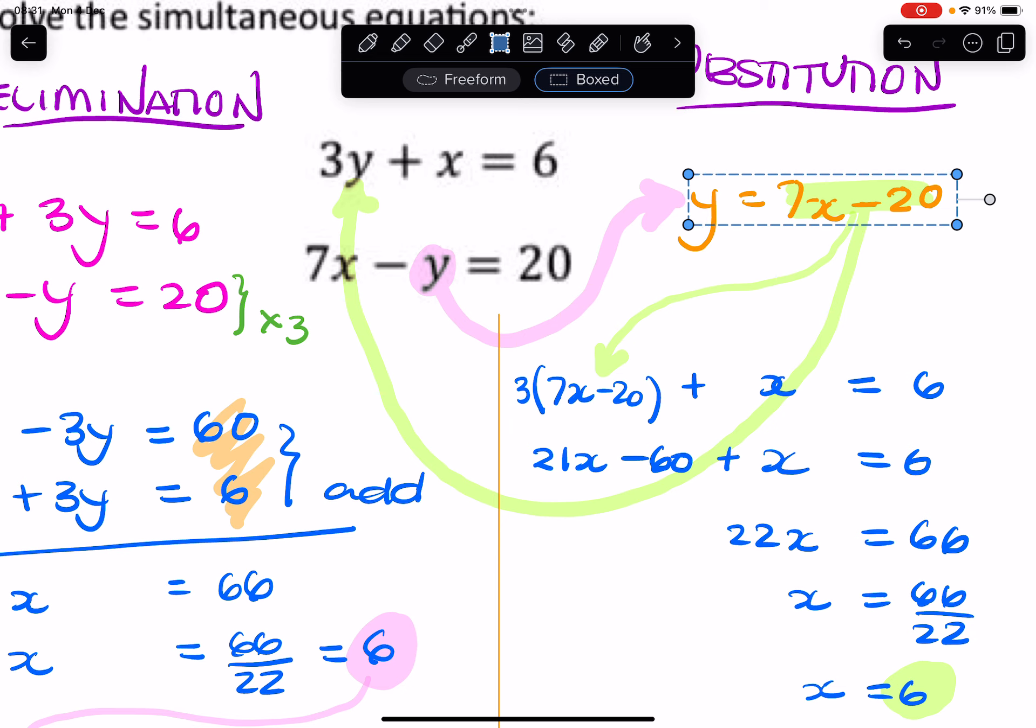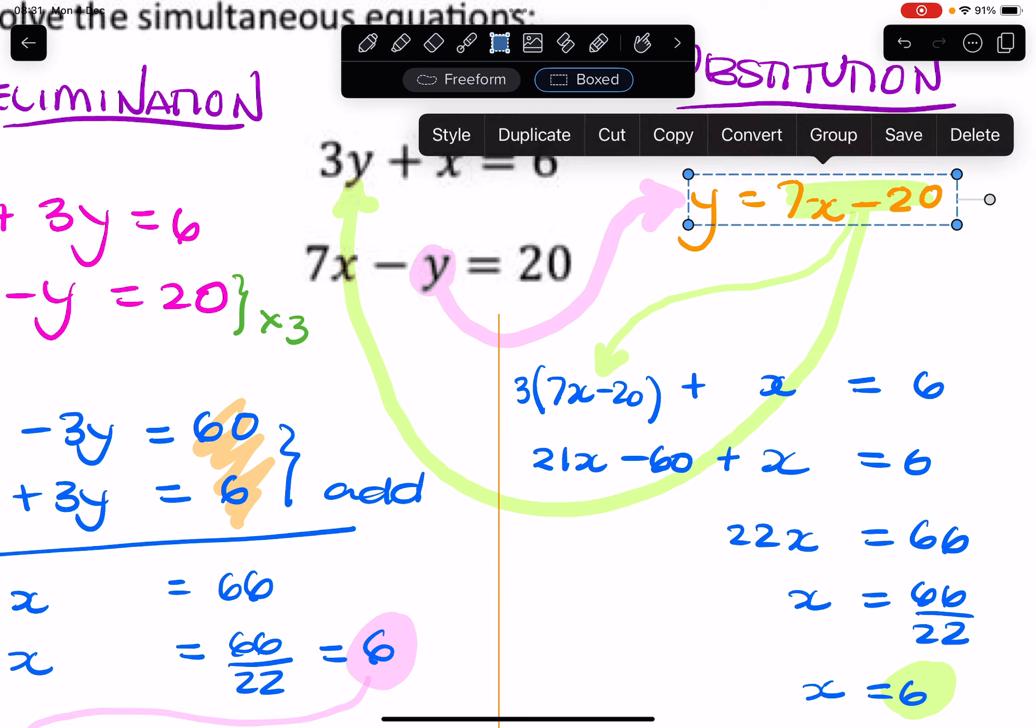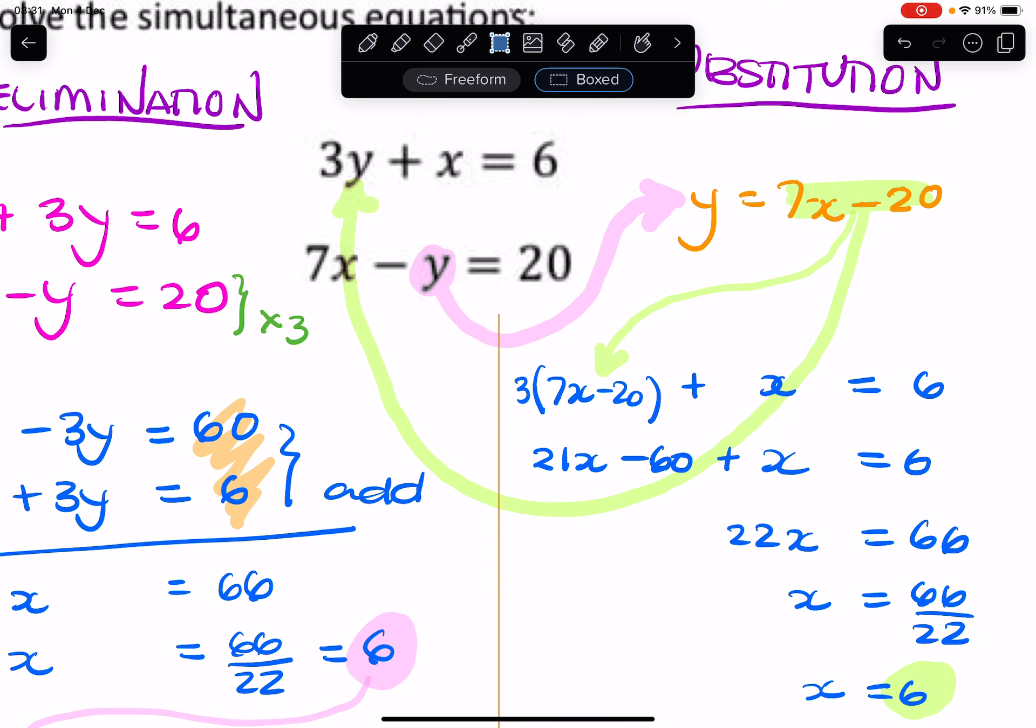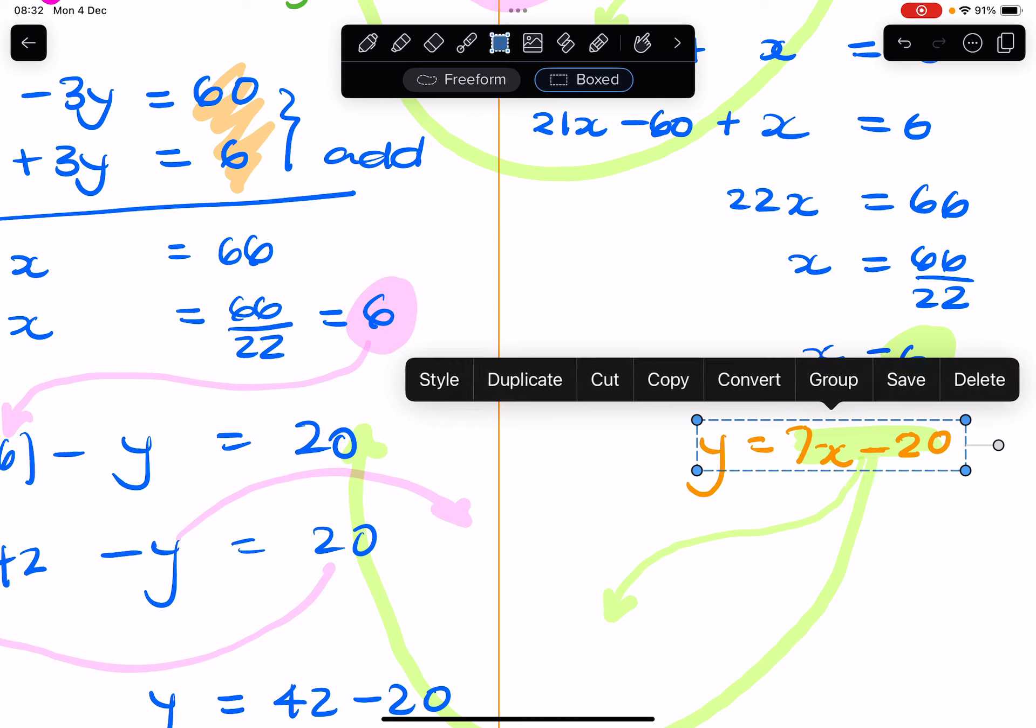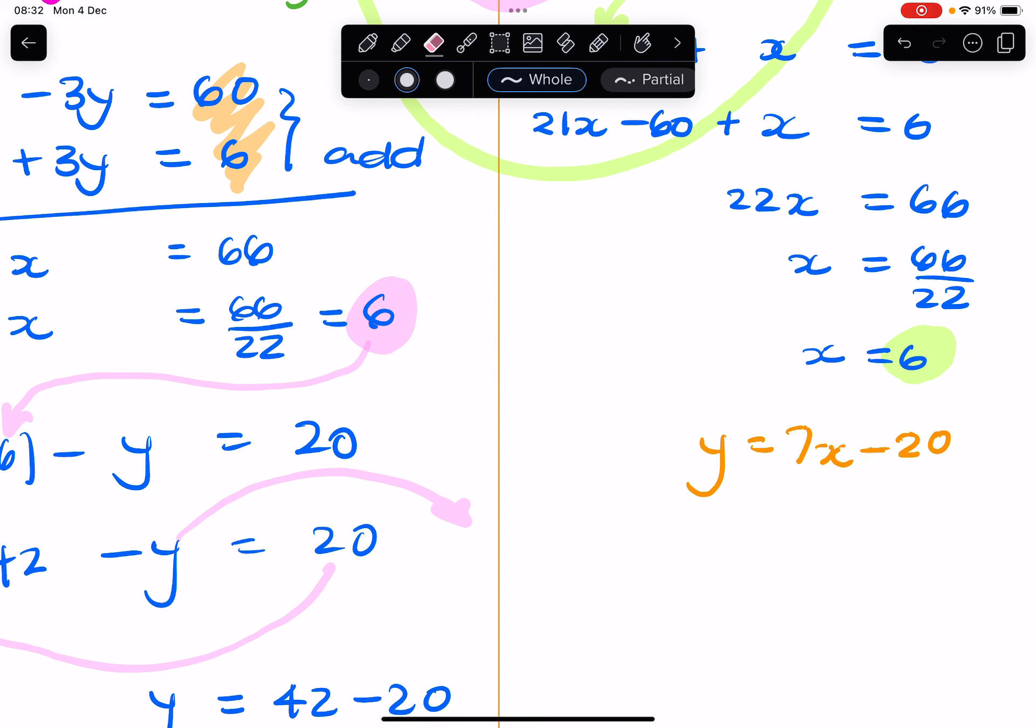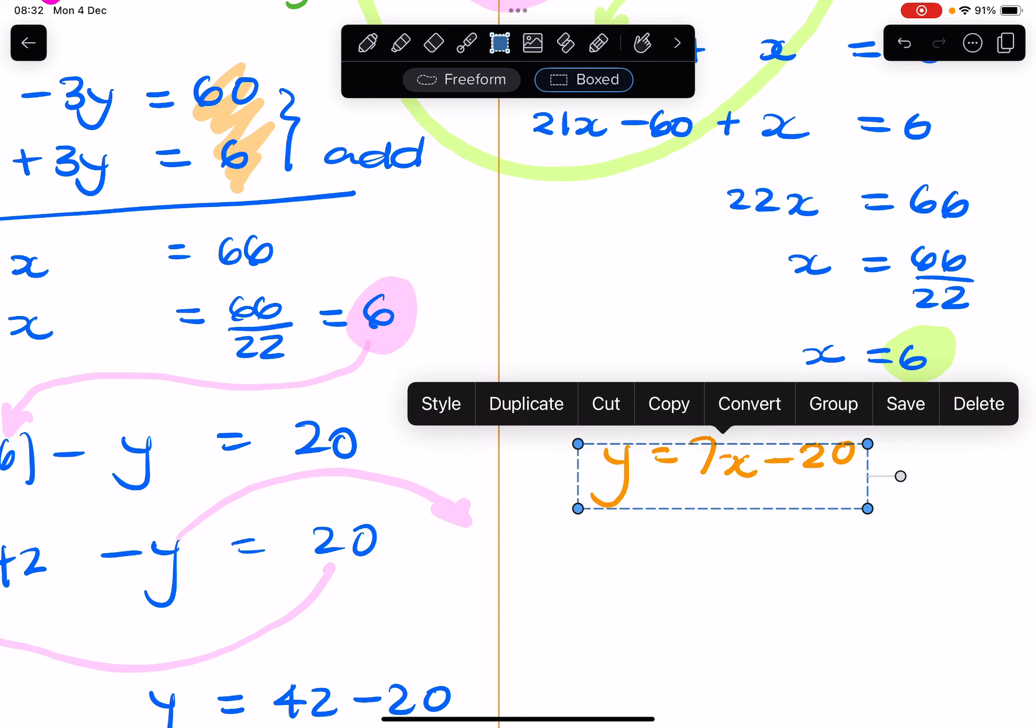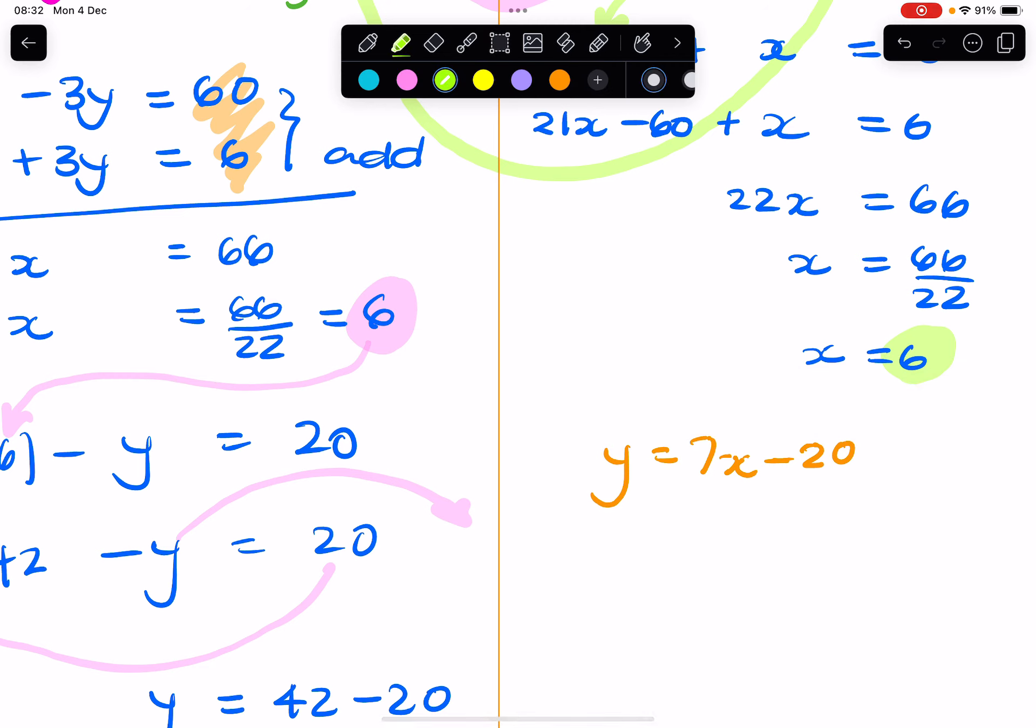So this is our expression for y. We can simply substitute the value of x in there, so y equals 7x minus 20, and this x will go in there. So y equals 7 times 6 minus 20.